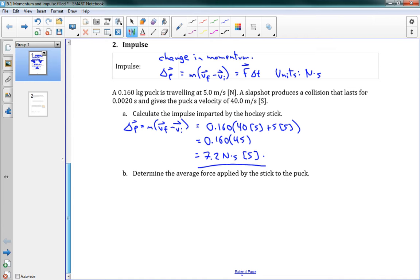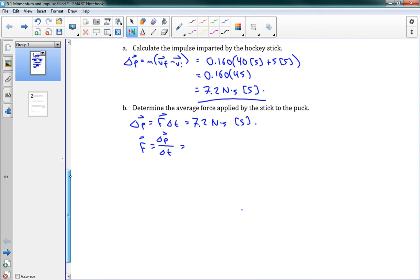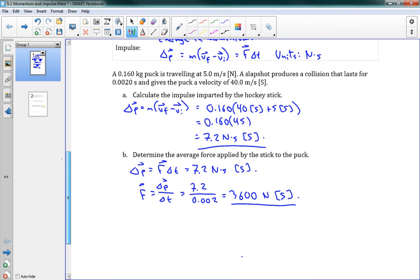And then we can use the other definition of impulse, the f delta t, to find the average force. So we know that impulse is equal to f delta t. Well, and we just calculated that it's equal to 7.2 newton seconds south. So that means that our force is going to equal our impulse over delta t. And we were told in the problem that this all happens over a time of 0.002 seconds. So I'm going to do 7.2 over 0.002. And this will give us a force of, one second here, it will give us a force of 3600 newtons south. There you go. That's the average force applied by the stick. And you see that again, this was something that would be difficult to do if we didn't know what we know about impulse and momentum.